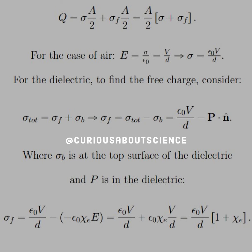For this direction, we want the bound charge at the top of the surface of the dielectric, and P is in the dielectric. So we use the definition of P as given on the note page, and we see that we have two negative signs that cancel, and also we know that the field is V over d, so we can factor epsilon naught V over d out, leaving us with 1 plus chi e, which is dielectric susceptibility.